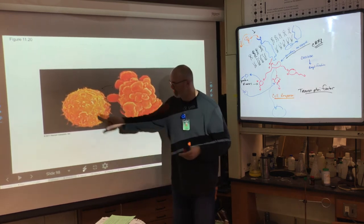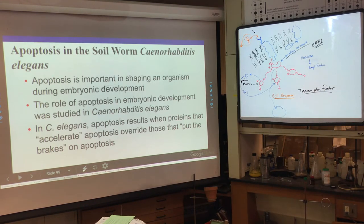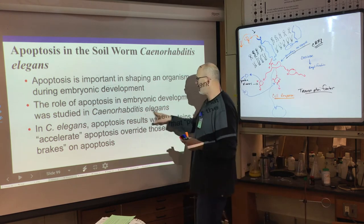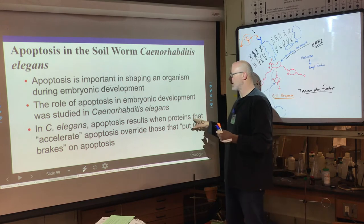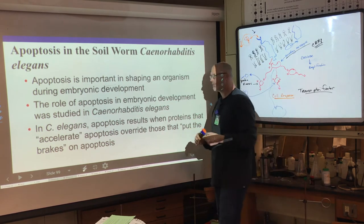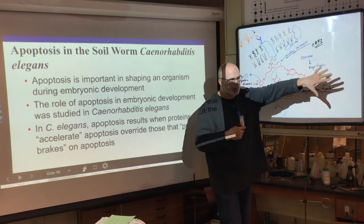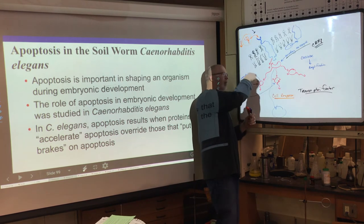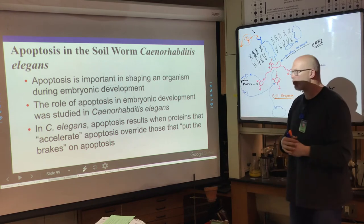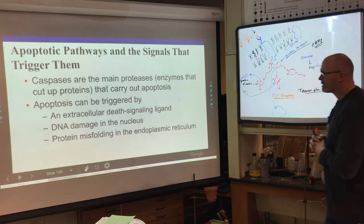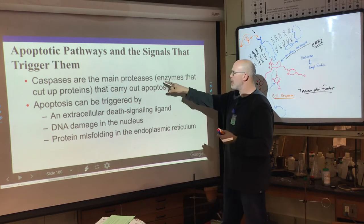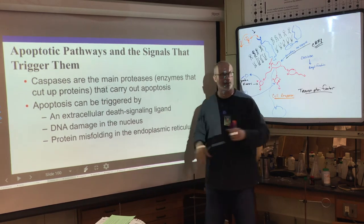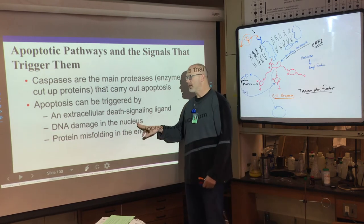Here's an example of a cell undergoing apoptosis — becoming lobed, with a white blood cell engulfing it. Apoptosis is important in shaping the organism — studied in C. elegans flatworms. Apoptosis results when proteins that accelerate it override those that put the brakes on it. Every cell has factors that when activated cause death, balanced against factors that stop it. Caspases are the main proteases that carry out apoptosis and can be triggered by an extracellular death-signaling ligand.